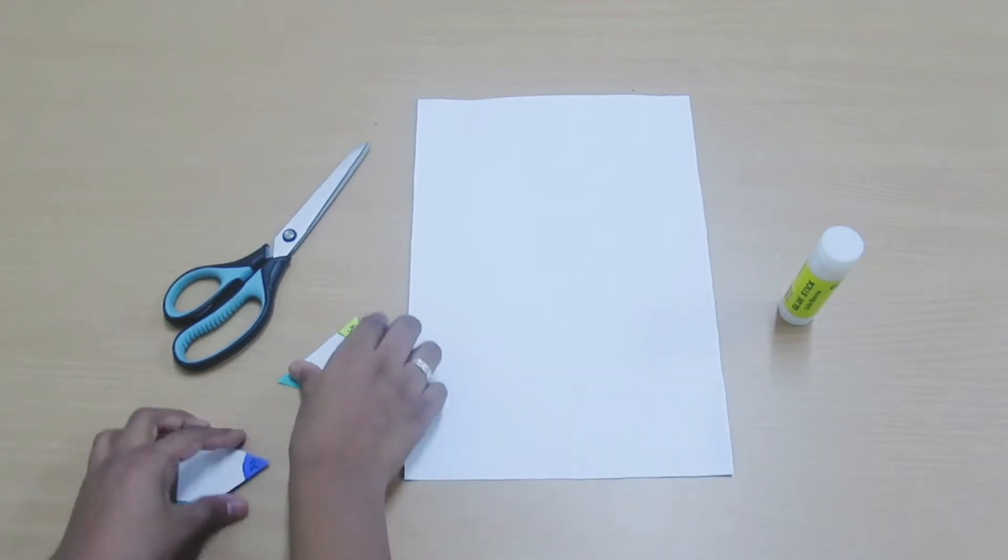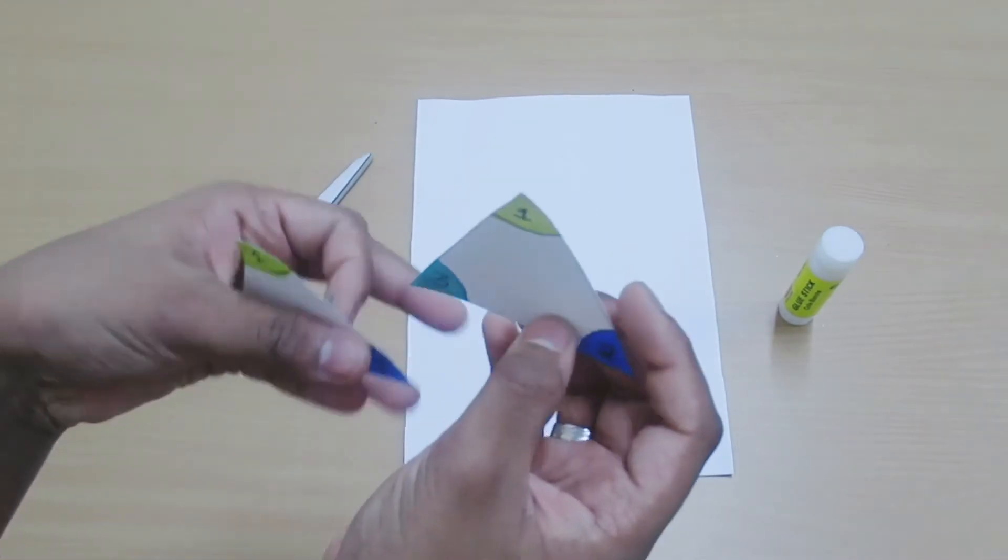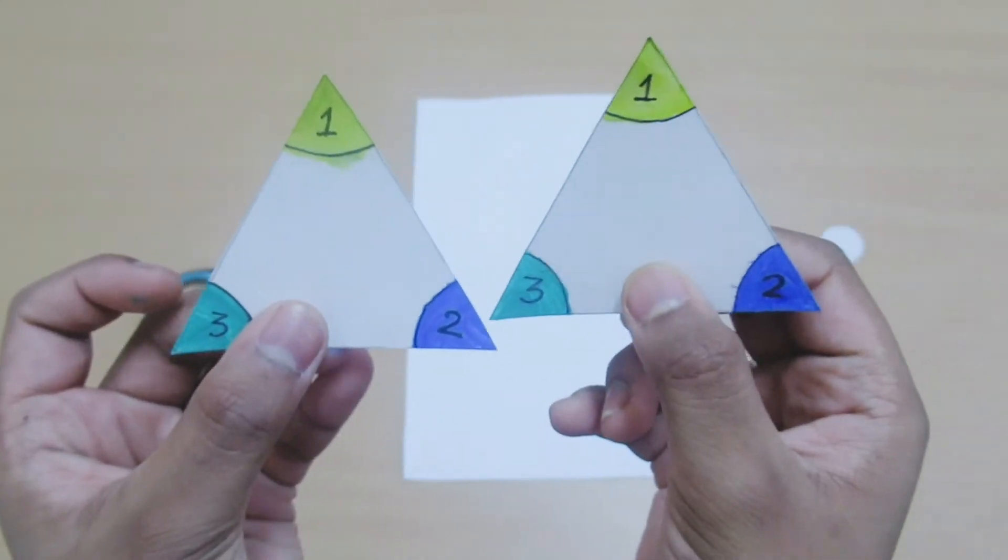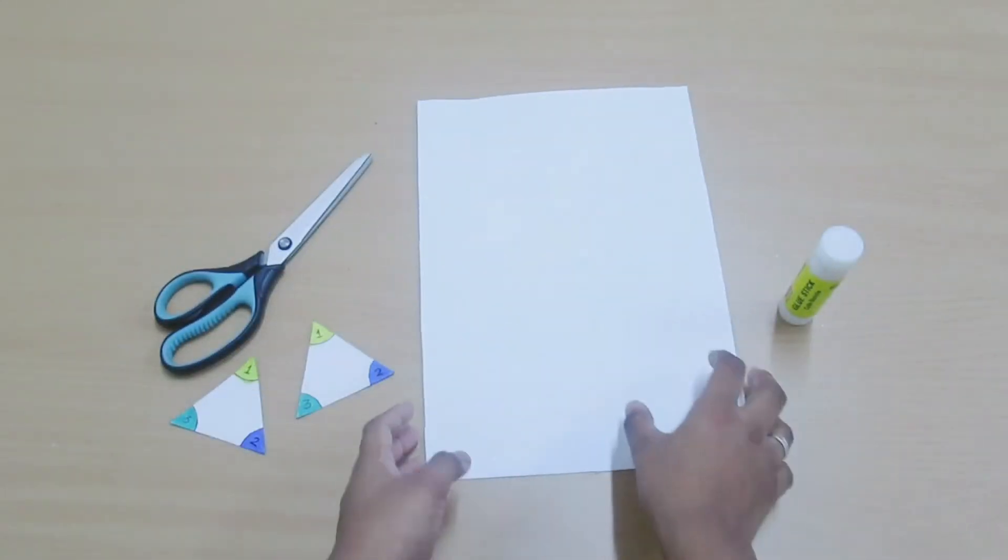We need scissors, cut two triangles with the same size, and mark the angles with the compass. Then we need a chart paper and a glue.